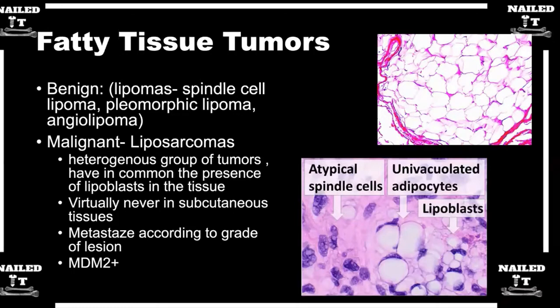Liposarcomas are actually pretty common for us to see — probably more common than pure fibrosarcomas. We see a lot of liposarcomas, and there are a couple of different variants: spindle cell liposarcomas, round cell liposarcomas, myxoid liposarcomas, et cetera.